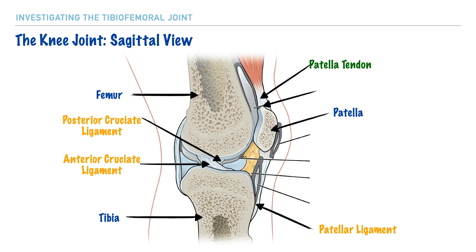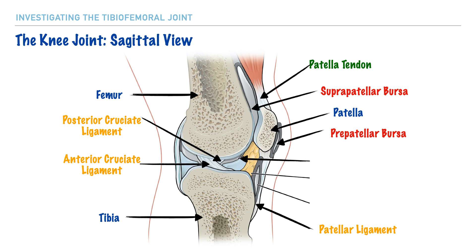Next, let's identify some of the bursa of the knee joint. Bursa are small sacs of synovial fluid positioned between ligaments, bones, and tendons to reduce friction during movement. First, we have the suprapatellar bursa — 'supra' meaning above — followed by the prepatellar bursa, 'pre' indicating in front of the patella. We also have the synovial cavity, which is the space between the articulating femoral and tibial surfaces containing synovial fluid to lubricate the joint. The infrapatellar fat pad provides blood supply to the inferior pole of the patella and the patellar ligament. Finally, there is the infrapatellar bursa.